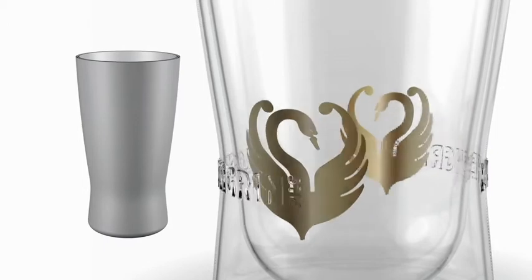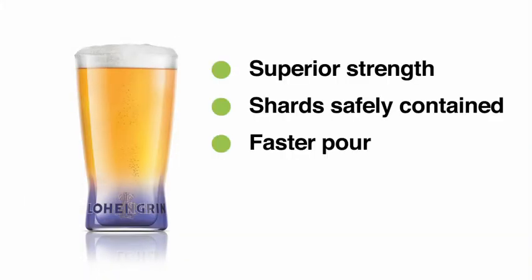If we have two glasses that fit inside one another, then we can create an inner glass which has a very smooth profile, so that you can pour a pint much faster, but then we can create the outer glass, which would then create the visual cues.